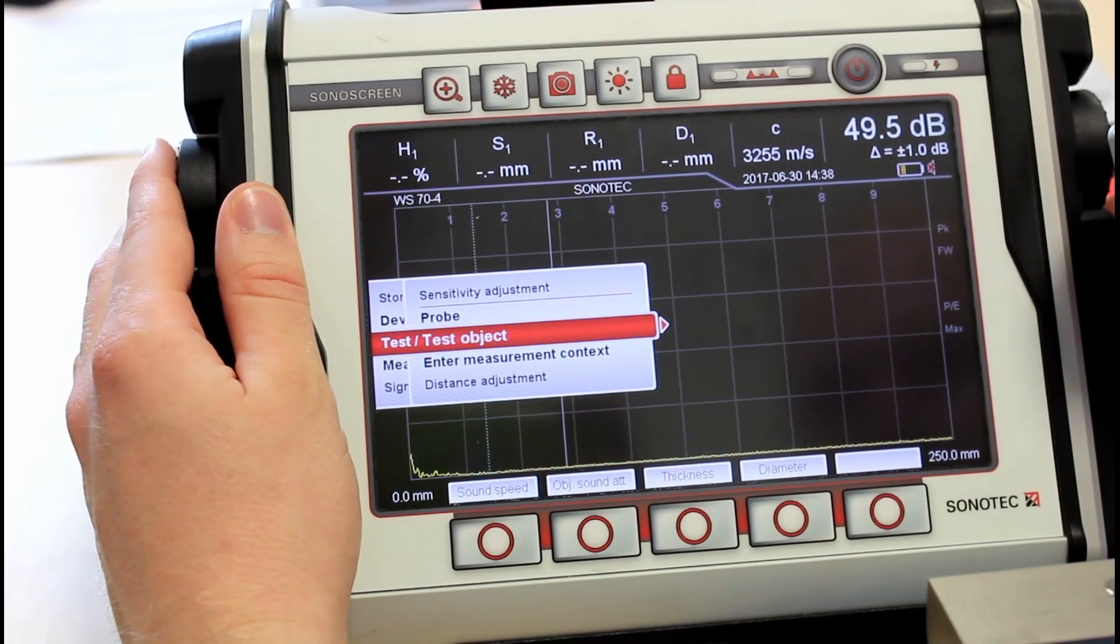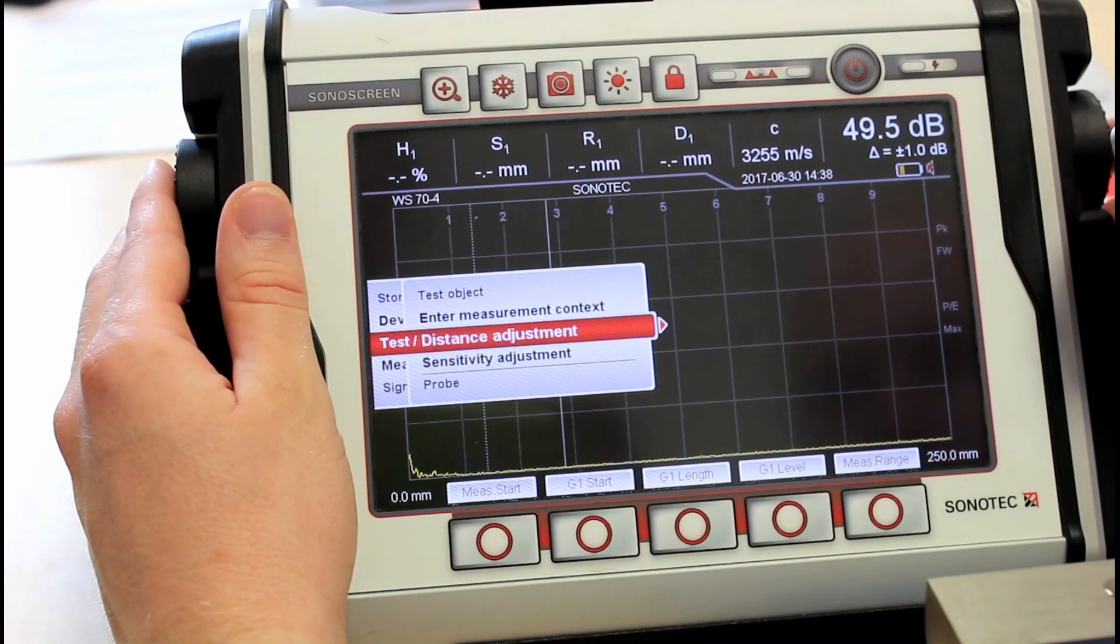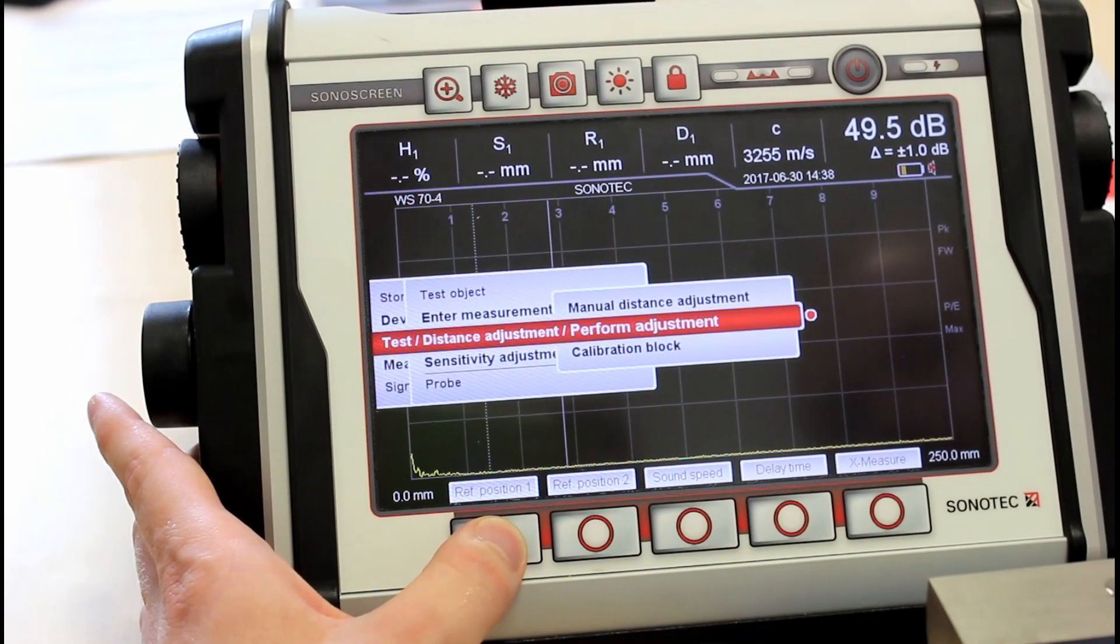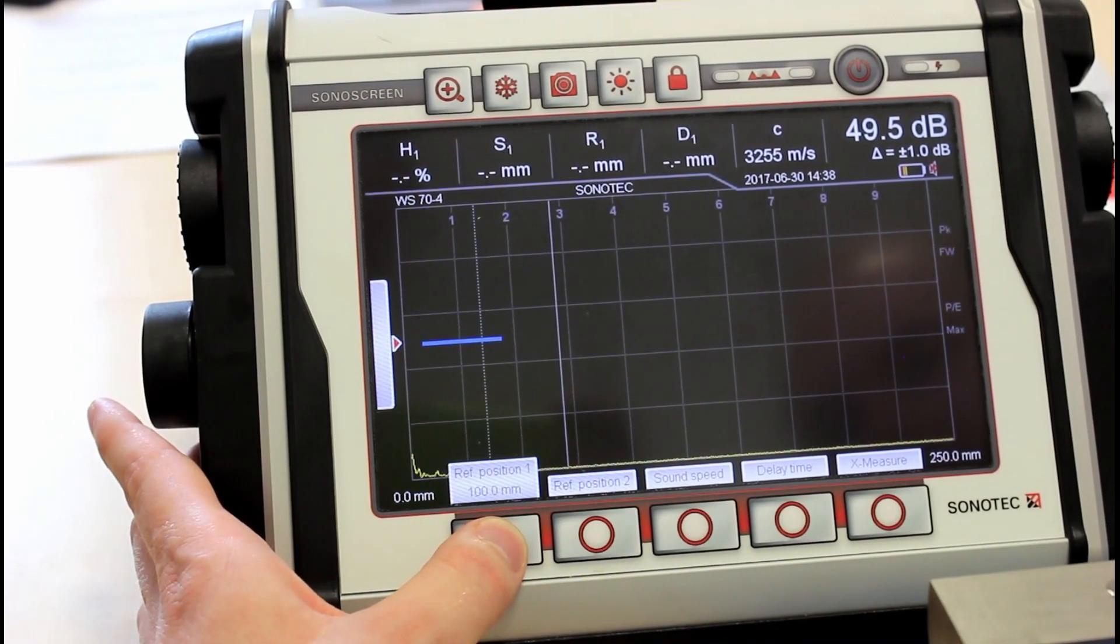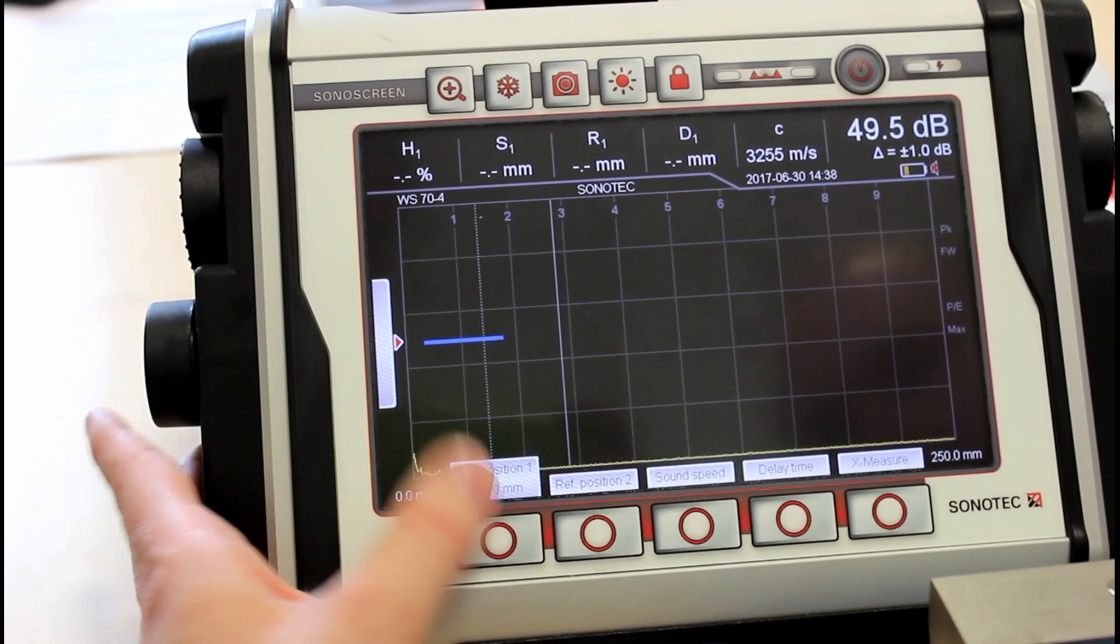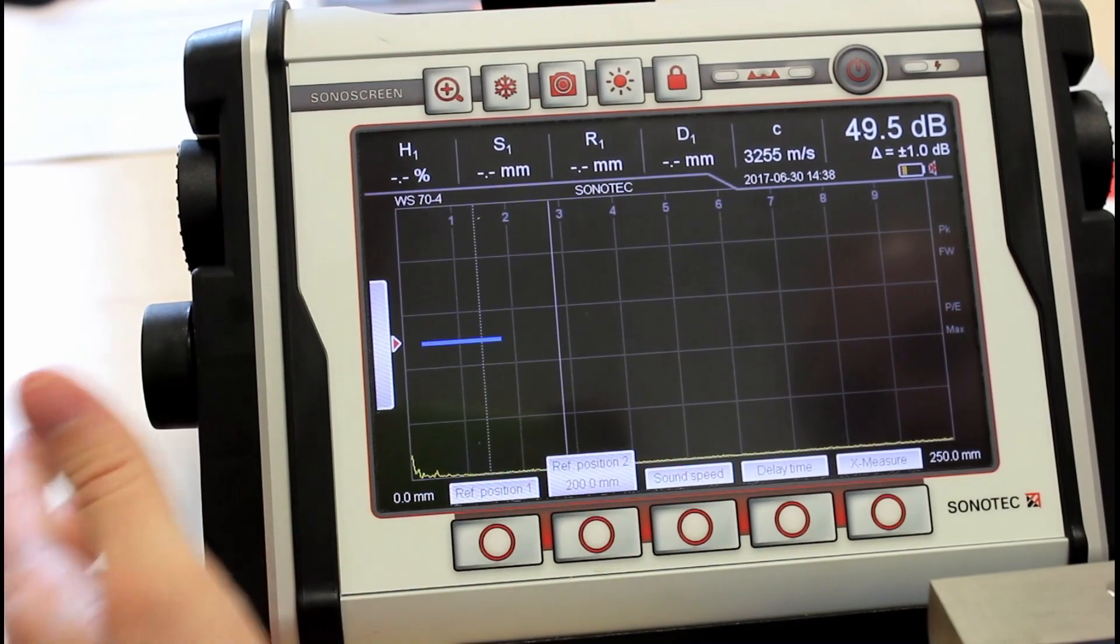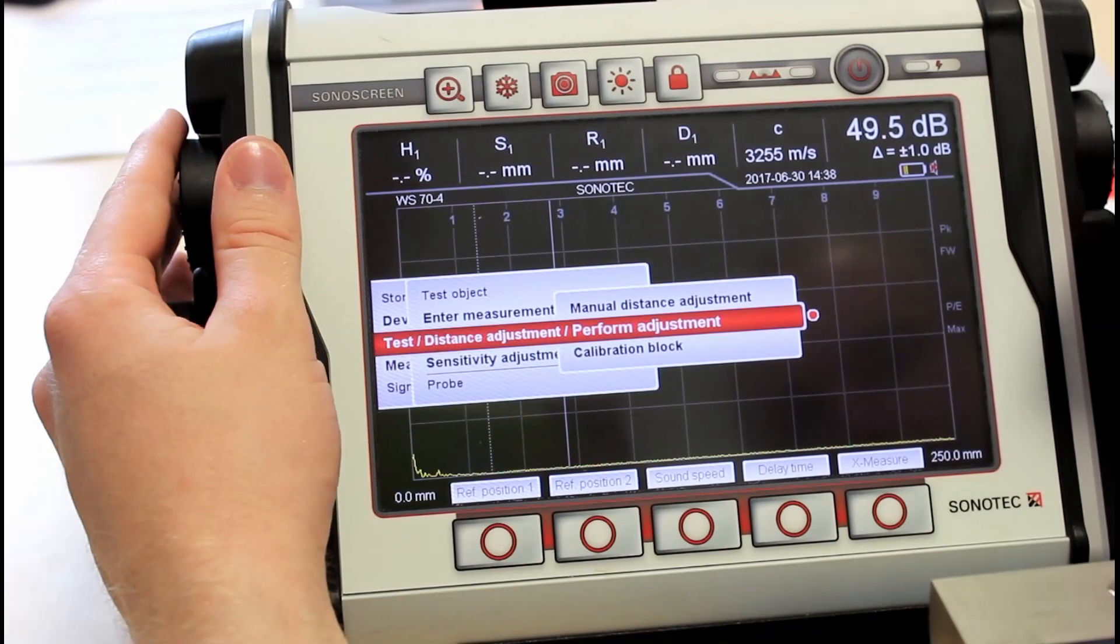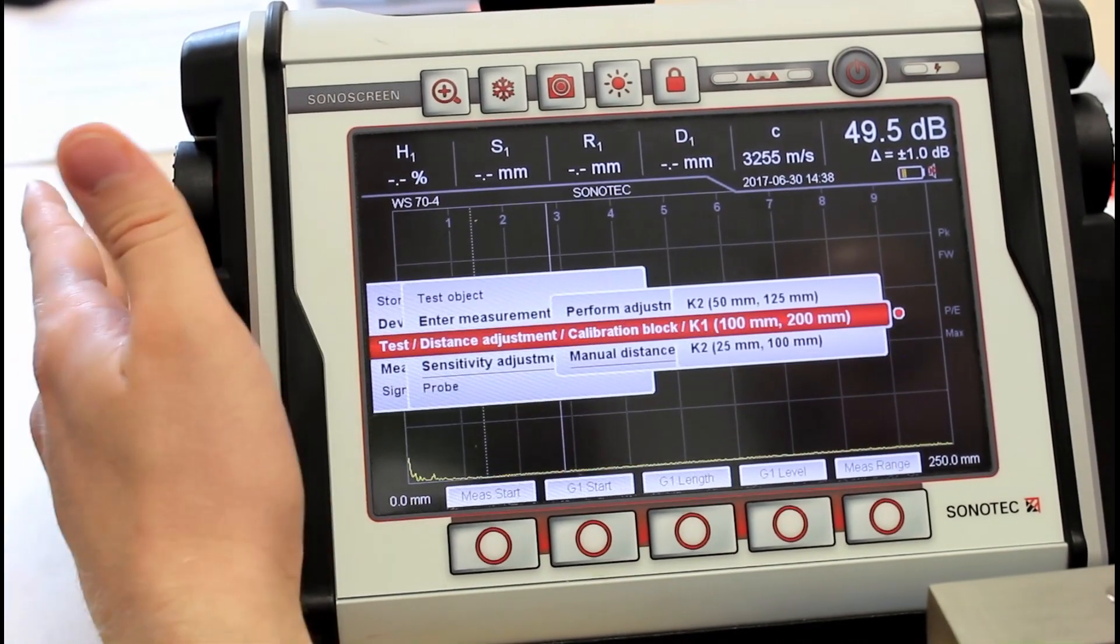So we are going back to the distance adjustment, which is the menu for calibration. And here you can put in the reference positions manually. Reference position one, one hundred millimeters. Reference position two, two hundred millimeters. Or you can select from a calibration block list.